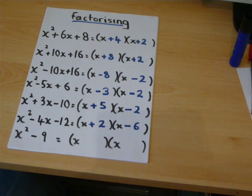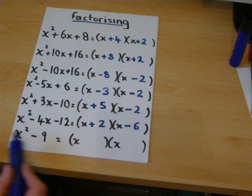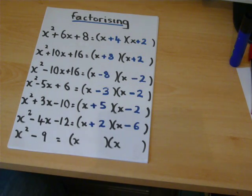The last example is called the difference of two squares. They are both squared numbers. There are no x terms.